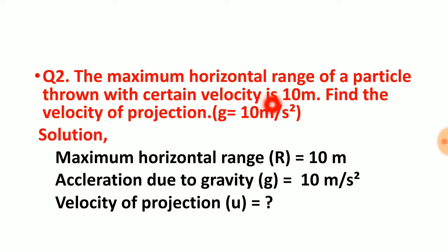This means maximum horizontal range is 10 meters. Here we need to find the velocity of projection, given that g is equal to 10 meters per second squared.